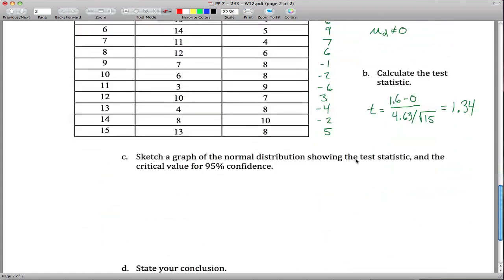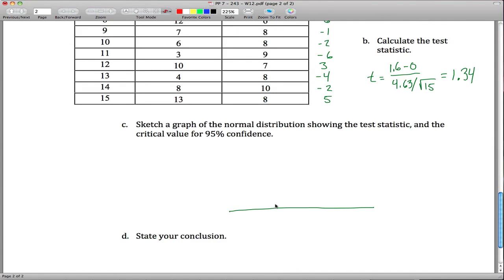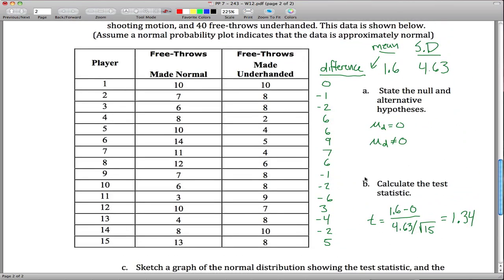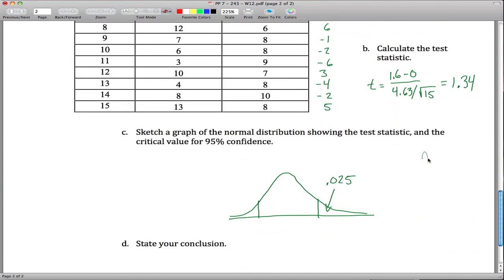So we have a test statistic, 1.34, sketch a graph, that's this guy here, it's a two-tailed test. 95% confidence tells us that we have 2.5% is the area on this side. If you go to your t table and figure out with, maybe I should have written this up top, since n equals 15, our degrees of freedom are equal to 14. So with 14 degrees of freedom, our critical value here is 2.145, which means that this is negative 2.145. And what that tells us is that our test statistic 1.345 is out here somewhere, and it's not in the rejection region.